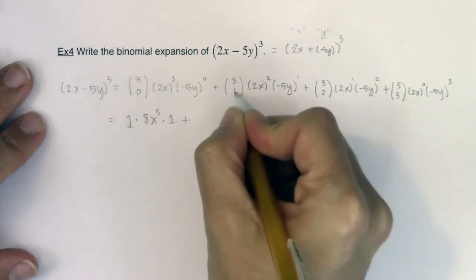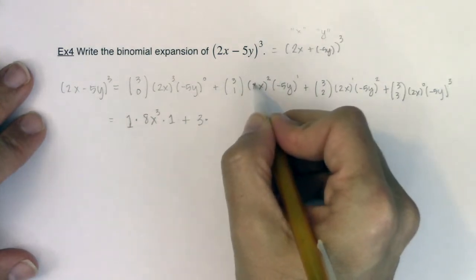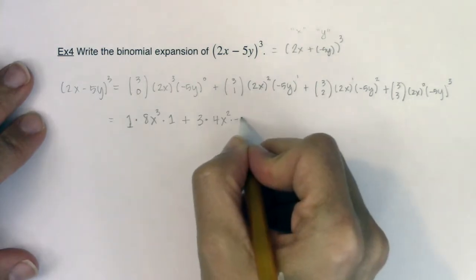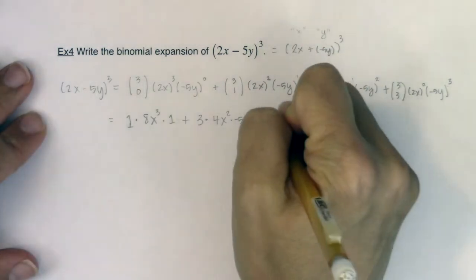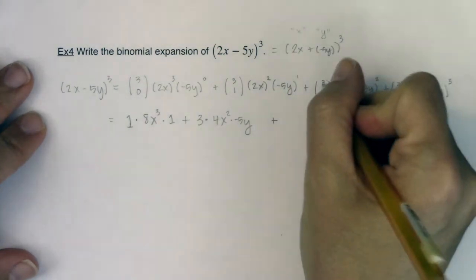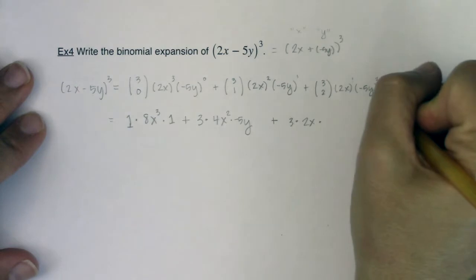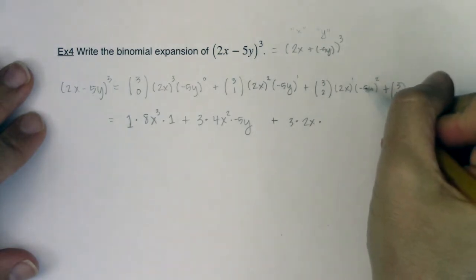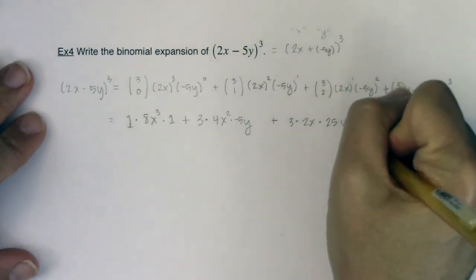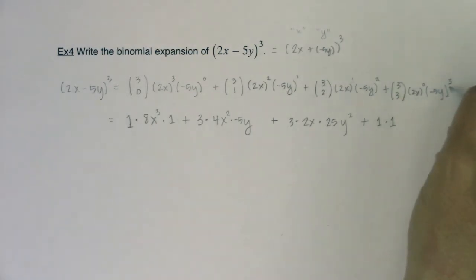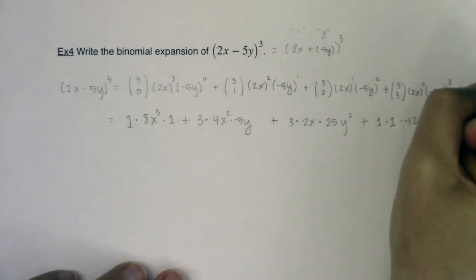So here we knew this coefficient was 3. 2x squared, well 2 squared is 4, x squared is x squared, and then I have times negative 5y. I'm going to add to it my next term. 3 choose 2 is 3. 2x to the first power is 2x. Negative 5y squared, well let's be careful, negative 5 times negative 5 is positive 25. Y squared is y squared. I'm going to add to it my next term. 3 choose 3 is 1. 2x raised to the 0 is 1. Negative 5y cubed, well we want to distribute the exponent. So negative 5 cubed is negative 125, and then y cubed is y cubed.